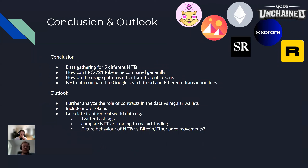To summarize: we gathered data for five different NFTs and compared them with typical usage patterns, as well as real-world data like Google search trends and Ethereum transaction fees. Future work might include excluding contracts from our dataset so that only real user activity is covered, including more tokens and comparing them with already analyzed tokens, finding more real-world data such as Twitter hashtags, comparing real-world trading to NFT trading, and looking into future behavior of the NFTs.